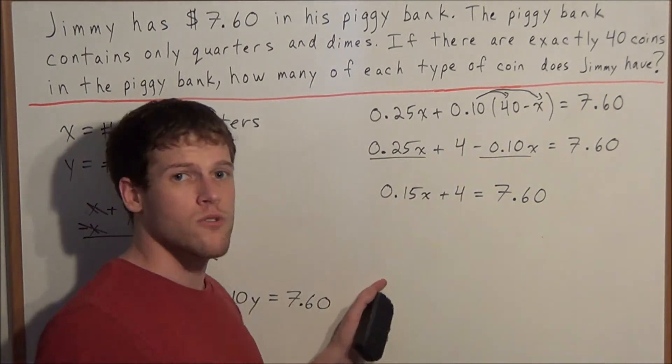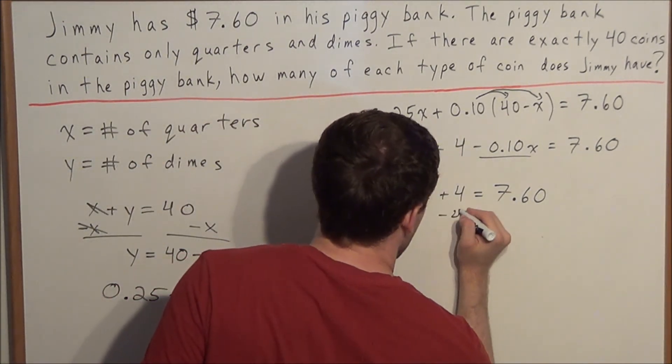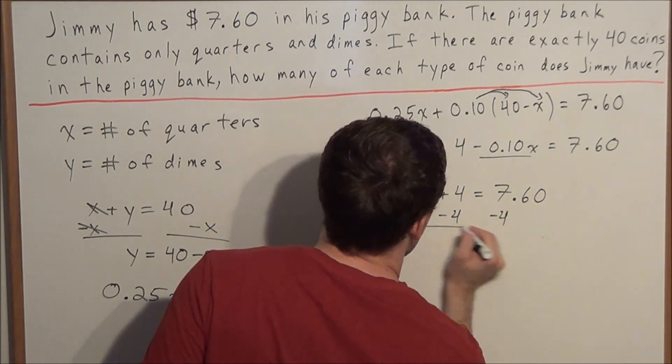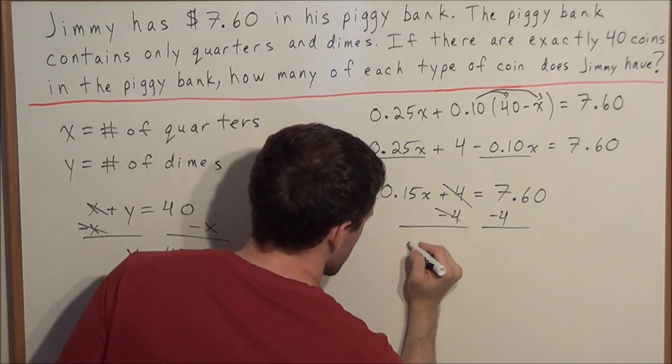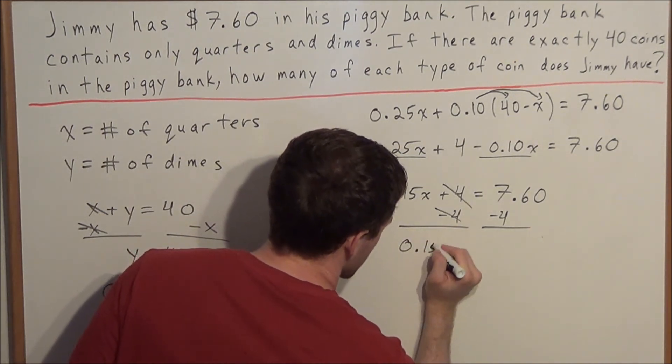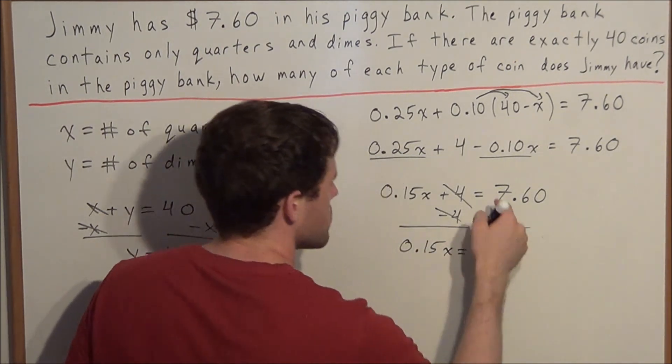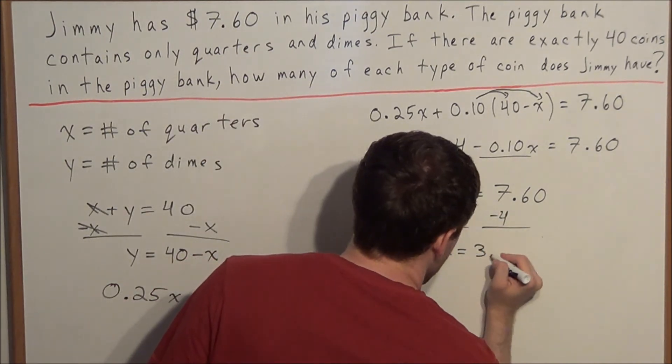So now to get x alone, we're going to subtract 4 from both sides. And now on the left-hand side, 4 minus 4 will cancel. We have 0.15x is equal to, and now we have 7.60 minus 4 is 3.60.